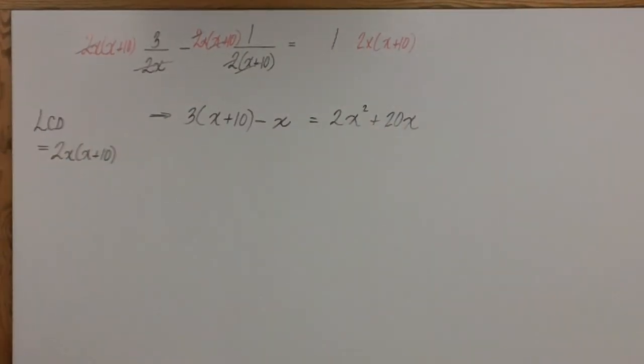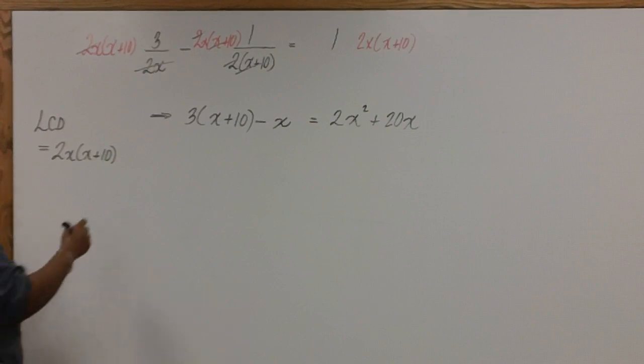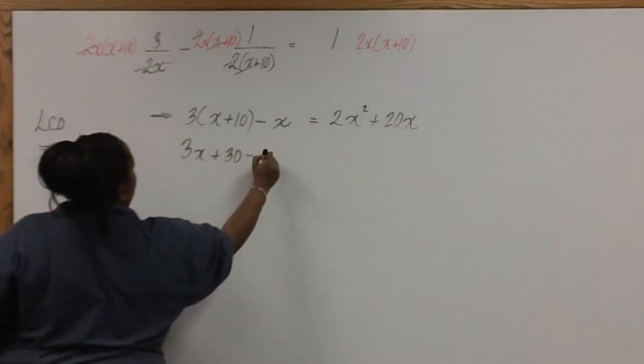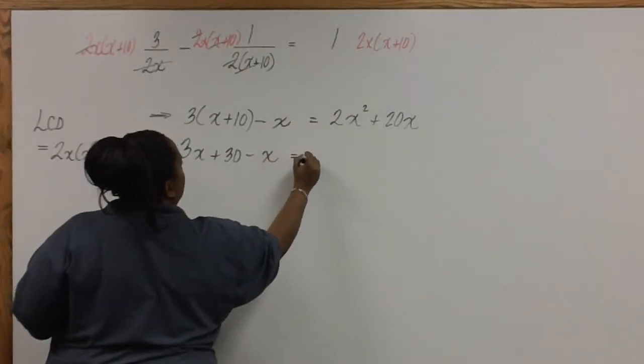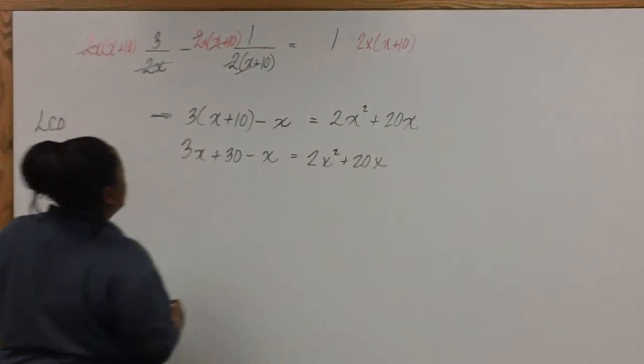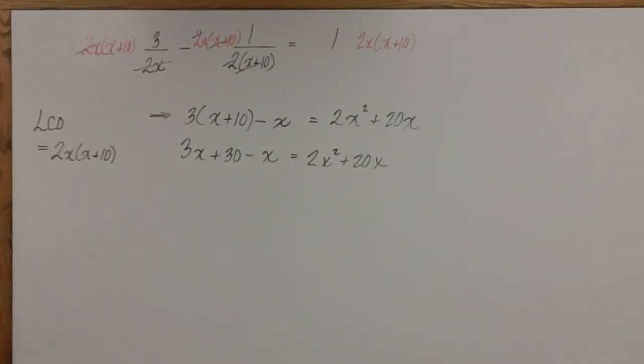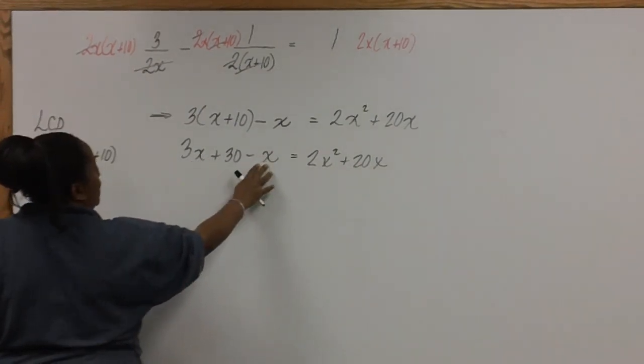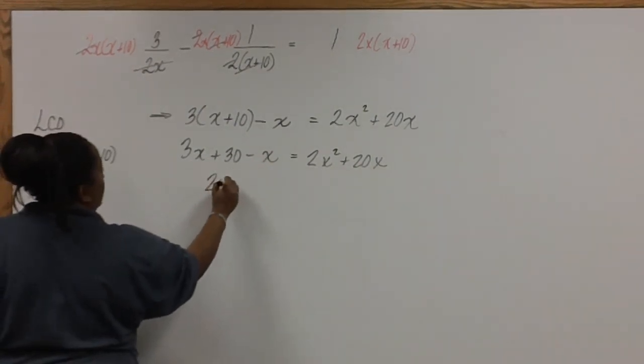Now we're ready to distribute. Notice that we have some like terms to combine on the left side of the equation. 3x plus negative 1x gives us 2x.